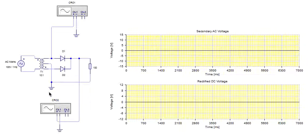And CRO2 is used to monitor the DC voltage at the output of this circuit. These are the two screens. On the upper screen we shall see the secondary AC voltage, and on the lower screen we shall see the rectified DC voltage.